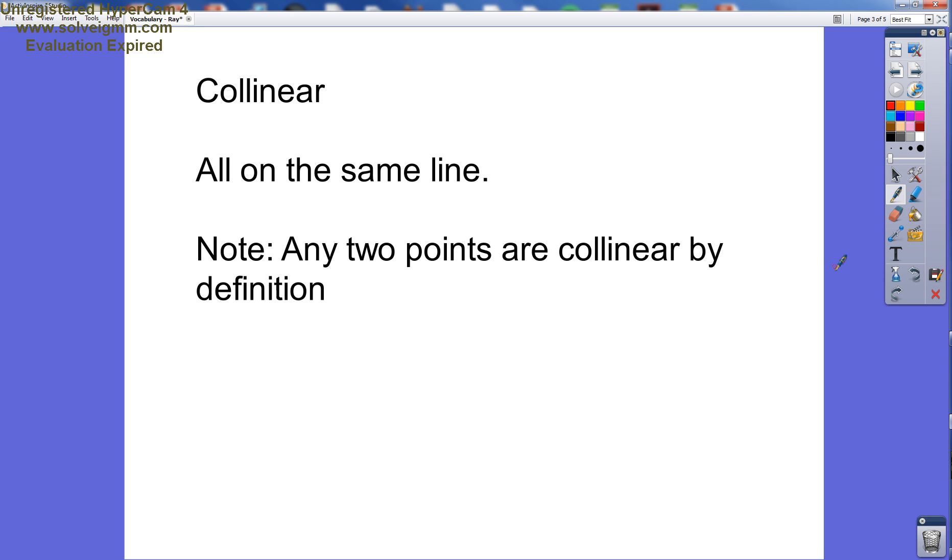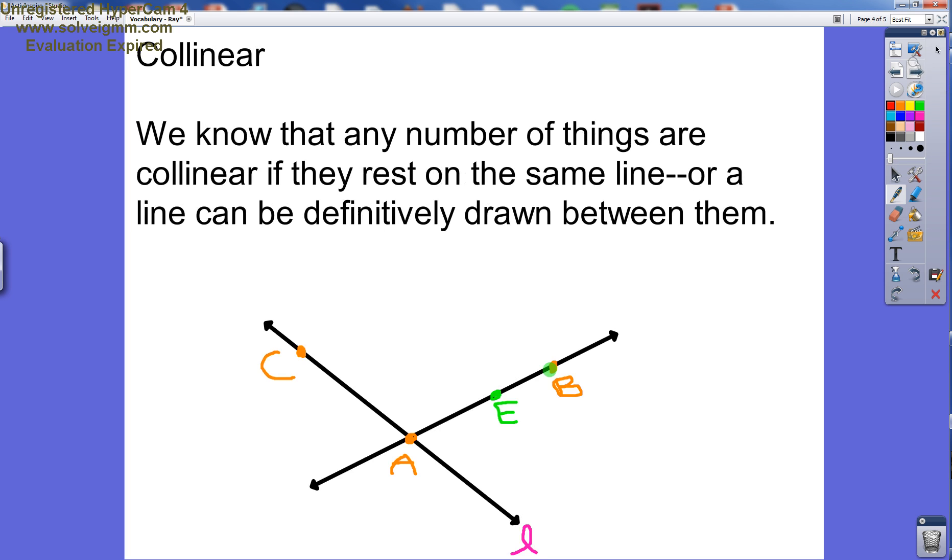And so any two points, just by the fact that there are only two points, are always going to be collinear. So if you are asked, is point A and point B, are they collinear? Your answer is always going to be yes. If you've got two things, there'll always be one line that you can draw between them.